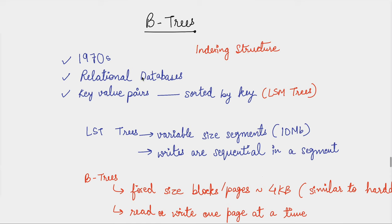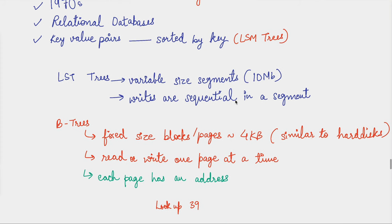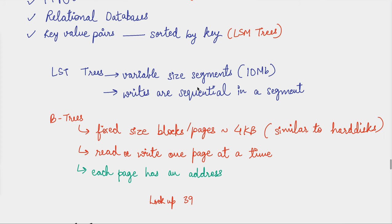B-trees are widely used in relational databases and originally came into picture in the 1970s. Like LSM trees, they also store key-value pairs and the keys are sorted. But in LSM trees, we were writing to hard disk in variable-size segments, with a compaction algorithm running in the background — taking a lot of segments, compacting them, ensuring duplicate keys are compressed into one single key in the final segment. The segment size was close to 10 MB.